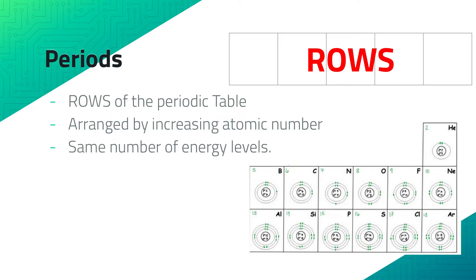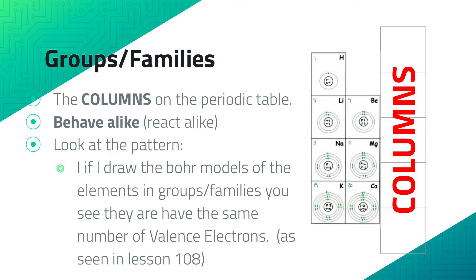Because boron and fluorine are in the same row, they share the same energy level. The groups or families are the columns on the periodic table — they behave alike, meaning their reactions are fairly similar. Look at the pattern: if you draw Bohr models of the elements in a group or family, you see they have the same number of valence electrons but a different number of energy levels.